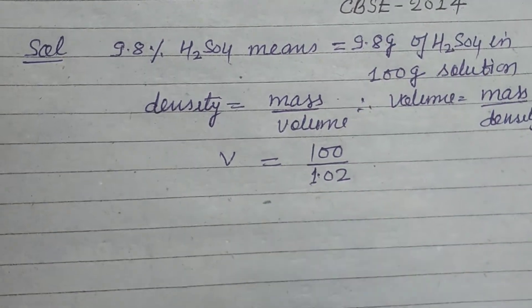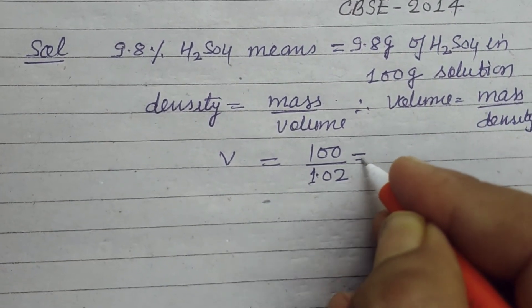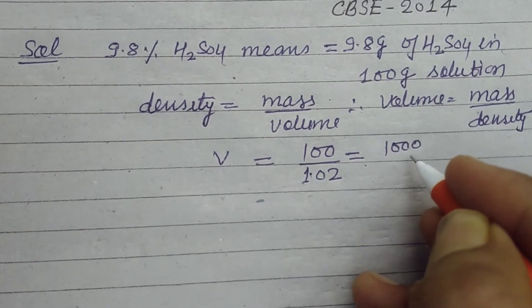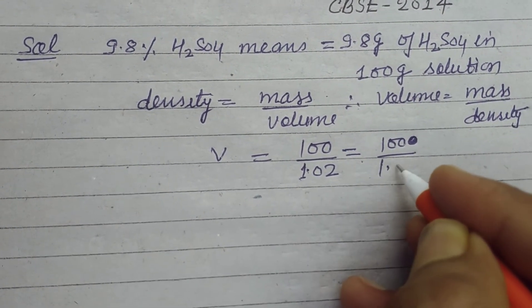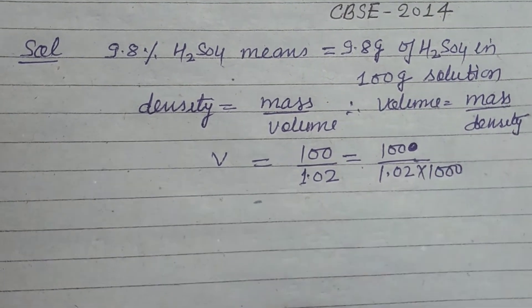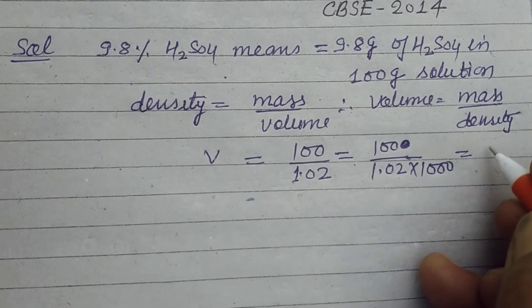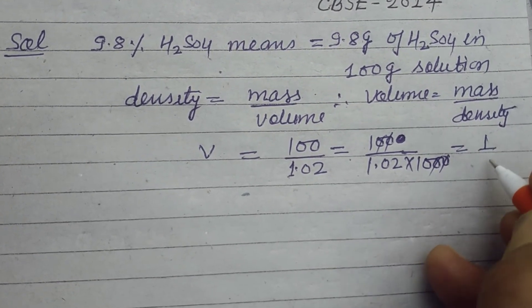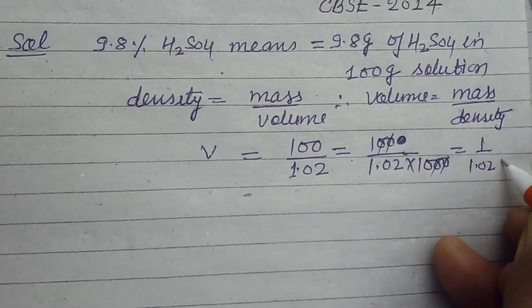This is in milliliters. We change it to liters, so divide by 1000. So this will be 1.02 into 10 to the power negative 1. Now molarity.